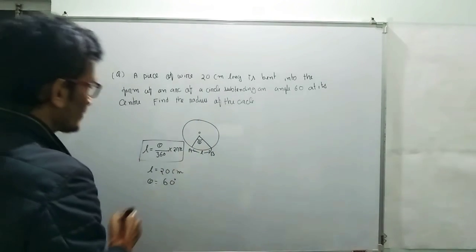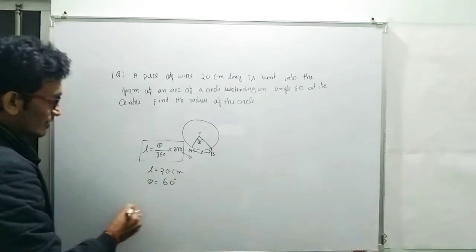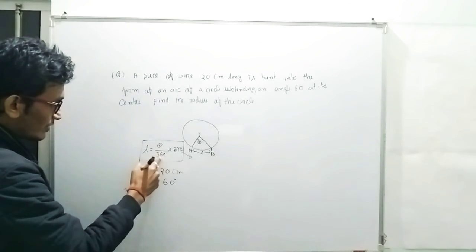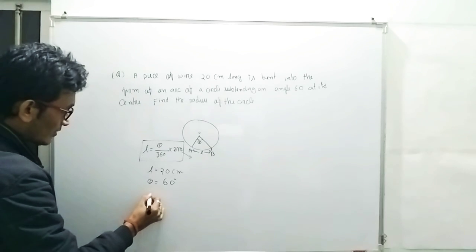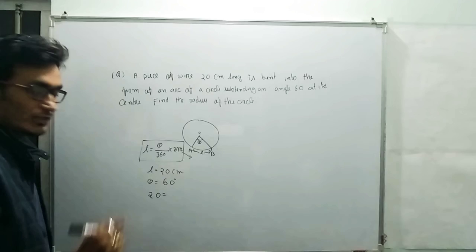So find the radius of the circle, we have to find out radius r. So we know the formula L equals theta by 360 degree into 2 pi r. So you can write 20 equals, since the value of L is 20 so you can write 20 here.